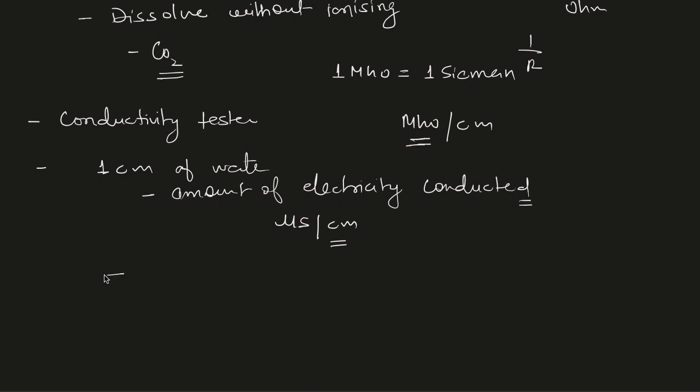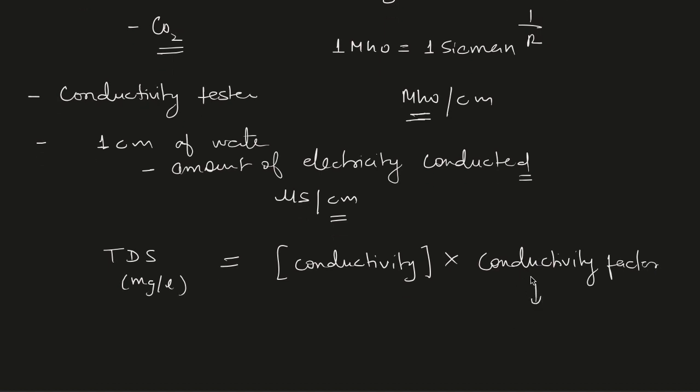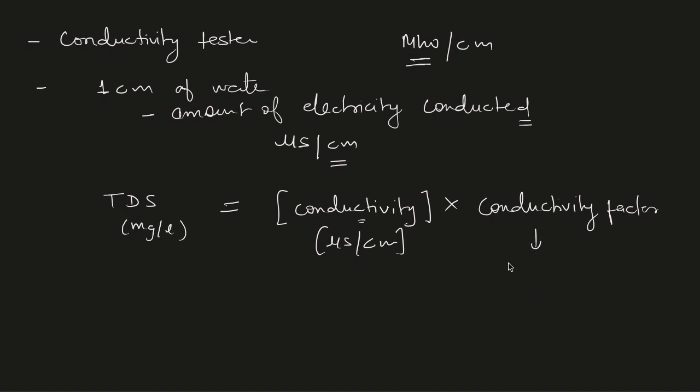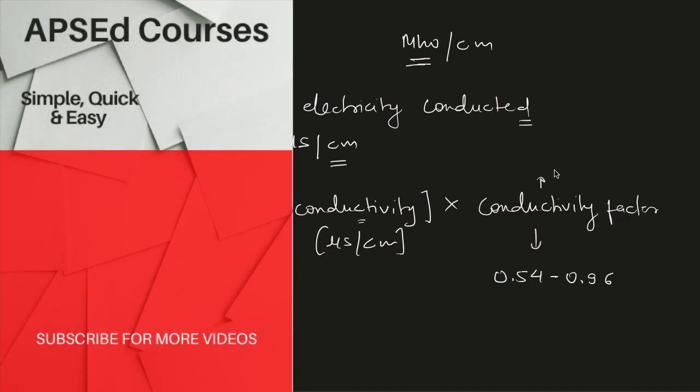If we talk about the relation between TDS and conductivity, there is this standard relation that is TDS in ppm or milligram per liter, it is given as conductivity times the conductivity factor. And the value of this conductivity factor, so this conductivity factor is just a conversion factor, that is converting the conductivity that is in micro siemens per centimeter or micro mho per centimeter into the TDS. So the value of this conductivity factor, it varies between 0.54 to 0.96. And if no other value is mentioned, then an average value of 0.67 can be used for the calculation.